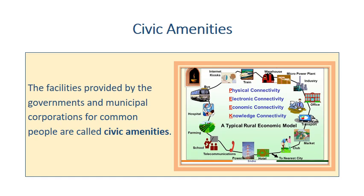Communities, both urban and rural, require public utilities such as water supply, electricity, roads, educational institutions, and health care facilities. These are also called civic amenities.